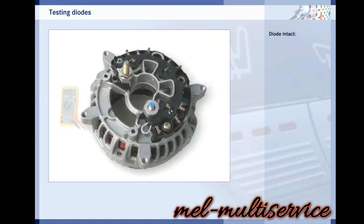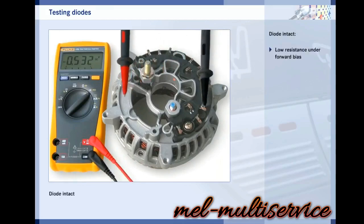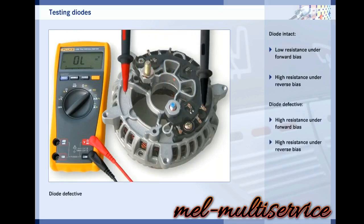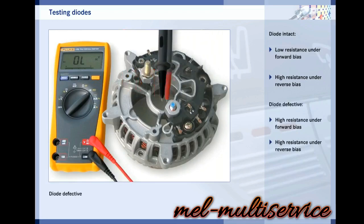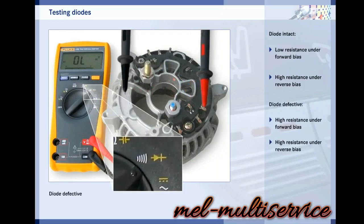You can find out whether or not a diode is intact by measuring its resistance using a multimeter. An intact diode conducts test current from the multimeter under forward bias and its resistance is low. The display shows the forward voltage. If the test voltage is applied with reverse bias, the resistance is very high and the display indicates overload. With a defective diode, the resistance is very high in both directions. Note that a special switch position on the multimeter is required because the test voltage has to be higher than the forward voltage.